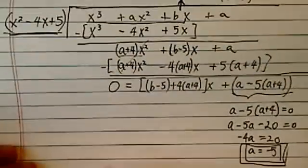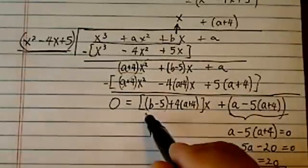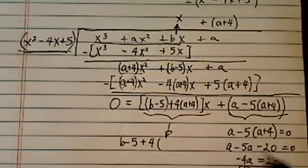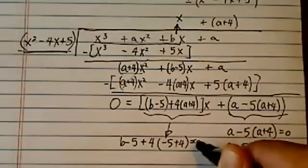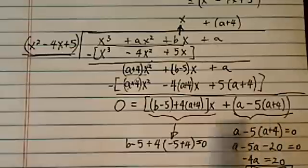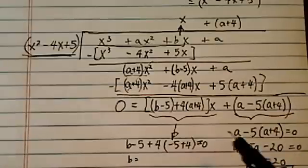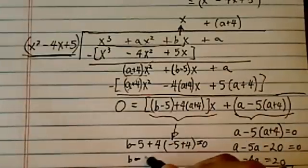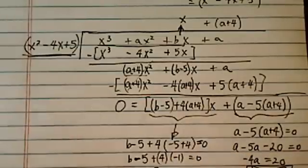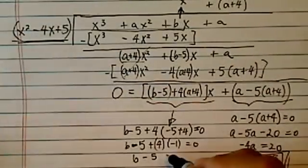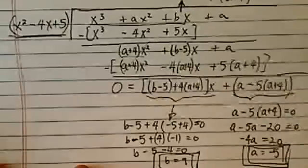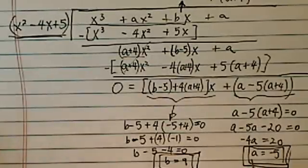Now I'll substitute a equals negative 5 into the x coefficient equation to find b. b minus 5 plus 4 times (negative 5 plus 4) equals zero. So b minus 5 plus 4 times (negative 1) equals zero; b minus 5 minus 4 equals zero; and b equals 9. I believe those are the correct answers from the question: a equals negative 5, b equals 9.